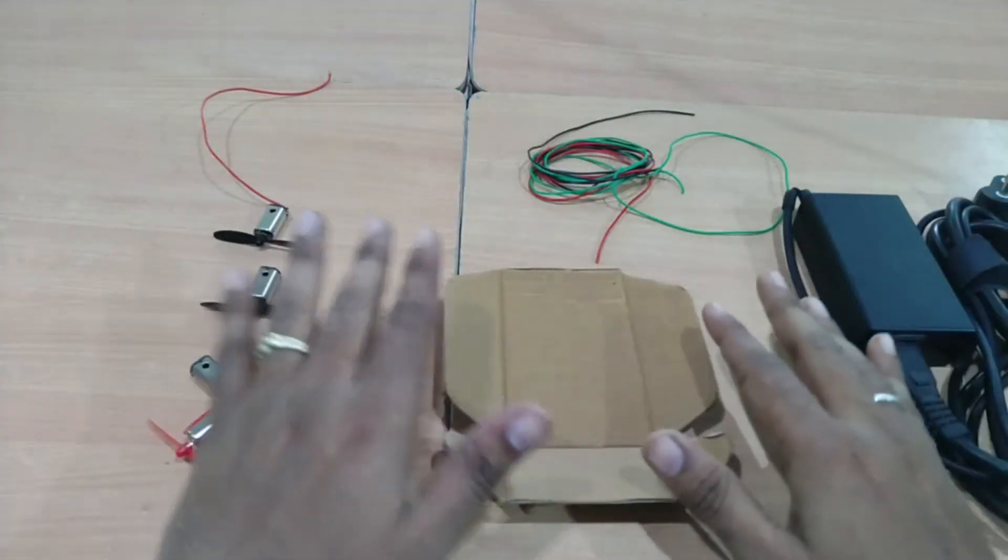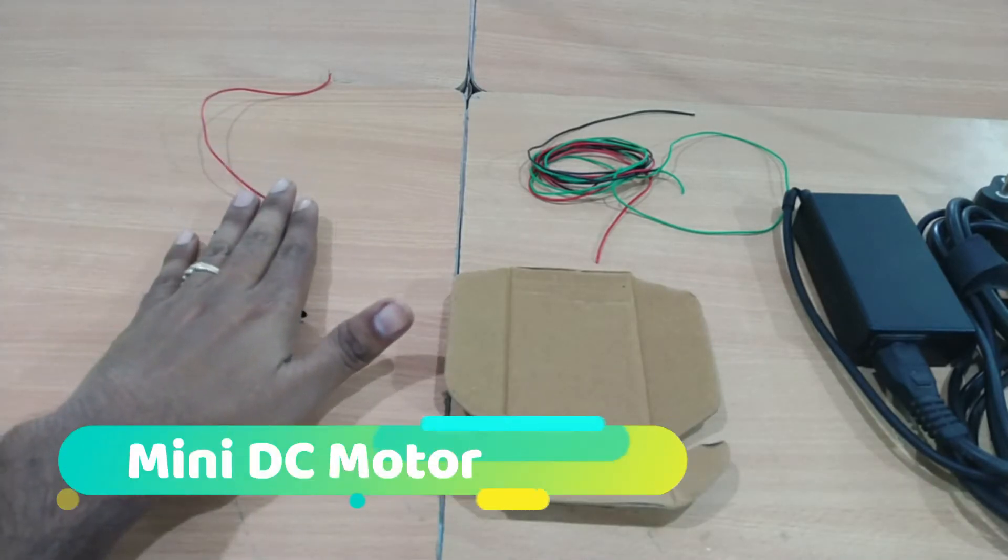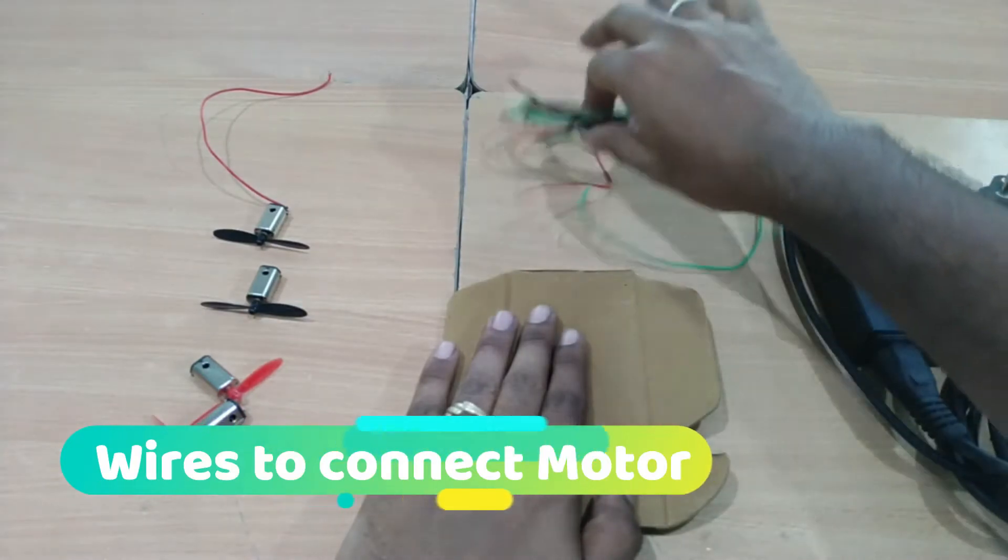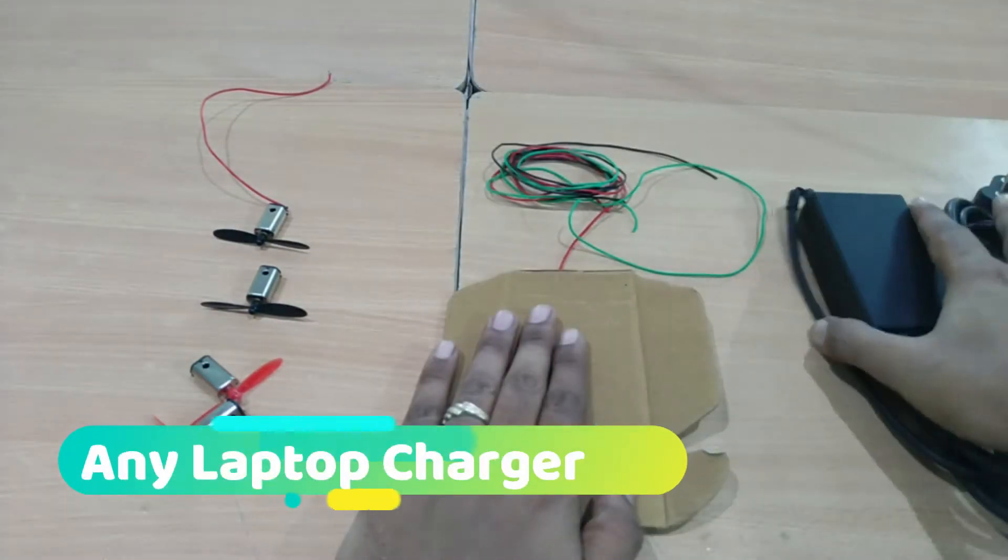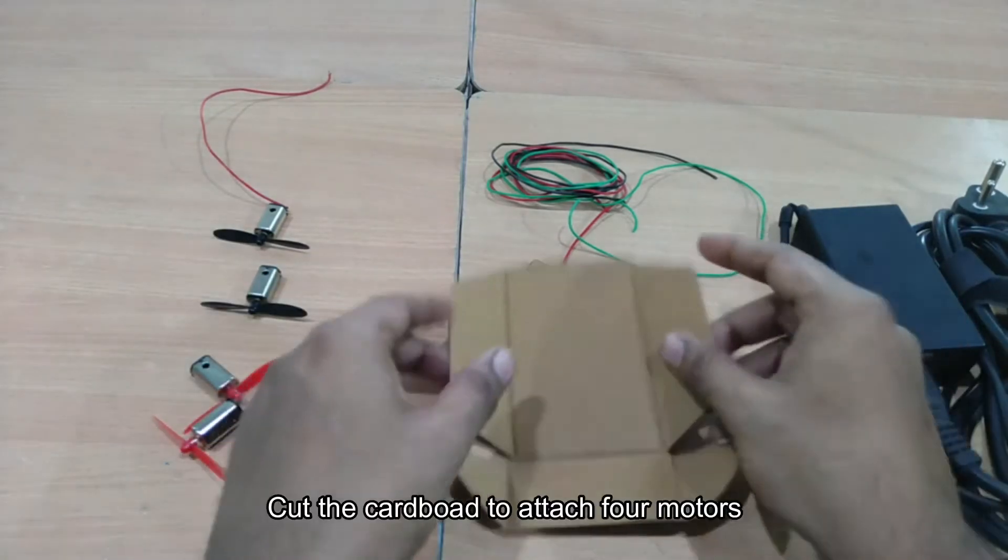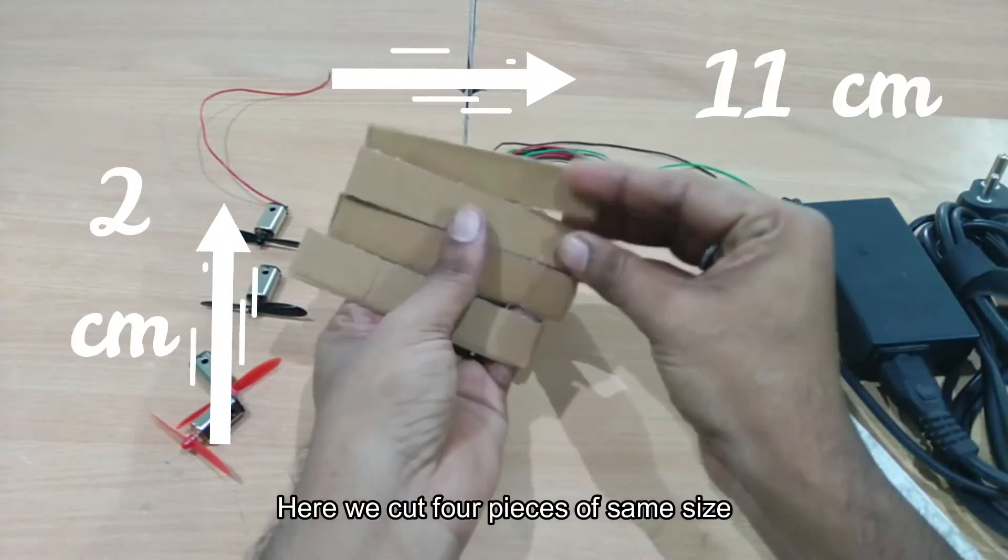These are the things we are going to use to create a mini drone. Here we are going to have four mini DC motors and cardboard, and we are going to use a power supply that we can charge. First, we are going to cut this into cardboard.